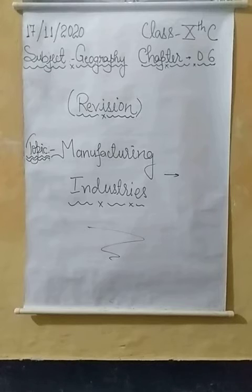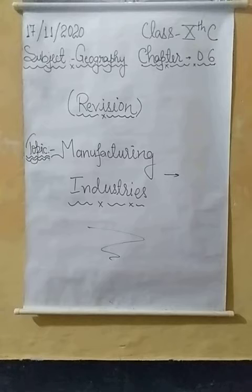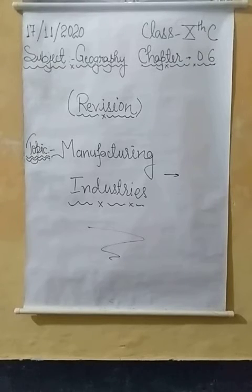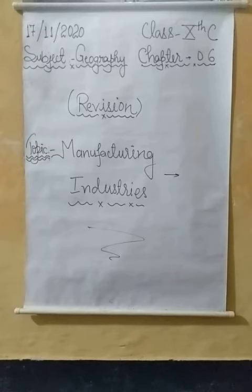As told in my previous explanation, industries based on agriculture raw material are referred to as agro based industries, like cotton, jute, silk, sugar, edible oil, etc. These industries have proved that agriculture and industry move hand in hand. Now I am going to discuss some of the important agro based industries of India, and number one is the textile industry.